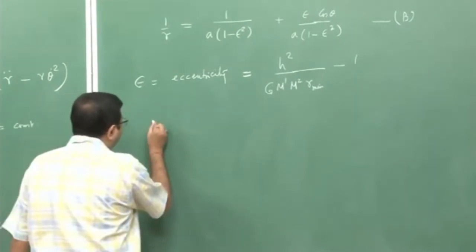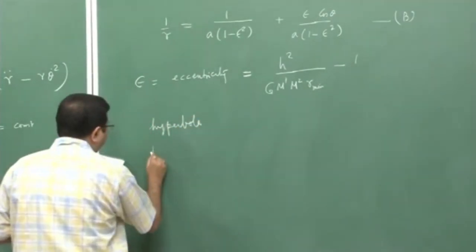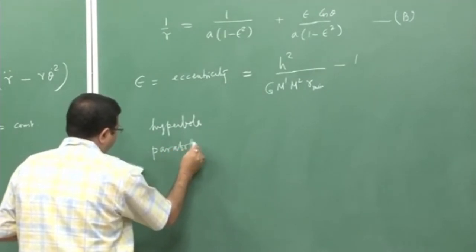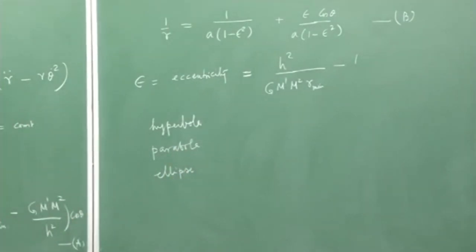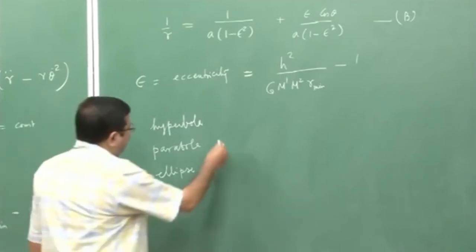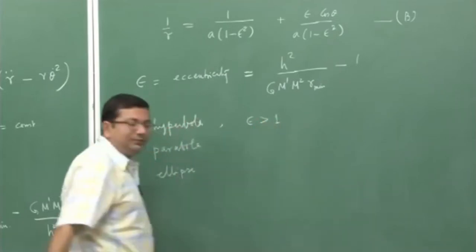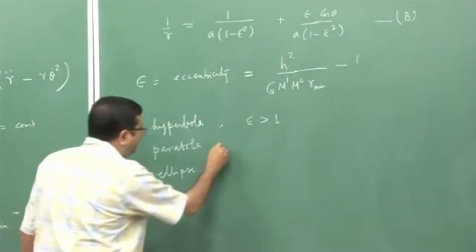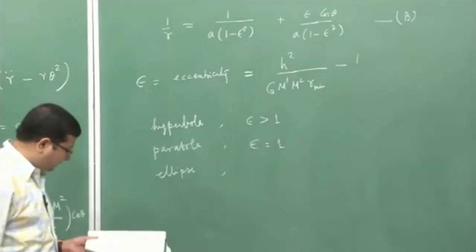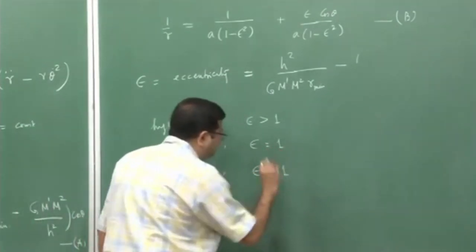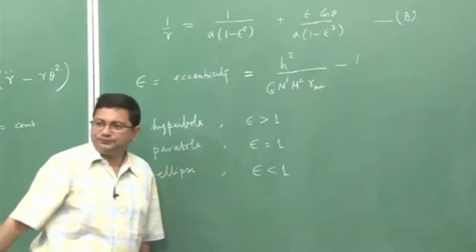The conic sections we have are: hyperbola, parabola, and ellipse. For a hyperbola, eccentricity is greater than 1. For a parabola, eccentricity is equal to 1. And for an ellipse, eccentricity is less than 1. These are the basic definitions of conic sections.